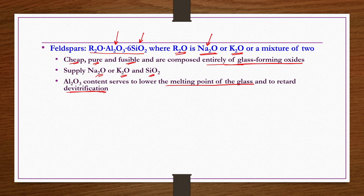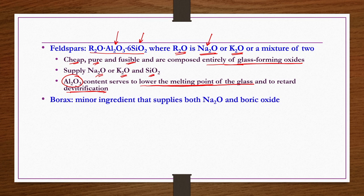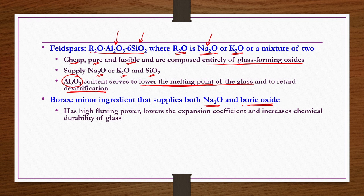Borax is a minor ingredient that supplies both soda as well as boric oxide (B2O3). It has high fluxing power, lowers the expansion coefficient — which is important to prevent glass from breaking with slight temperature increase — and increases the chemical durability of glass.